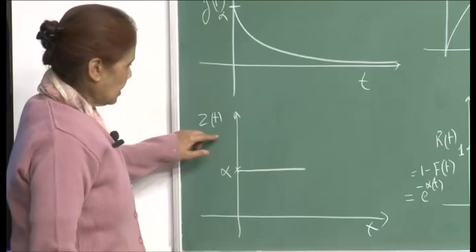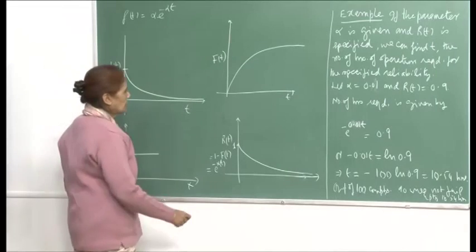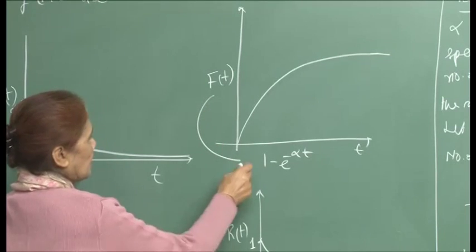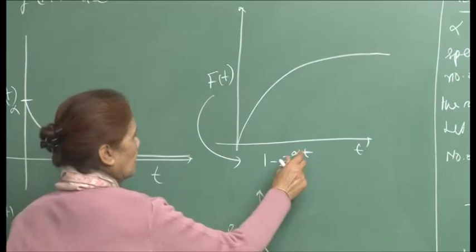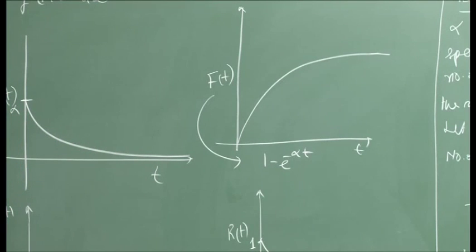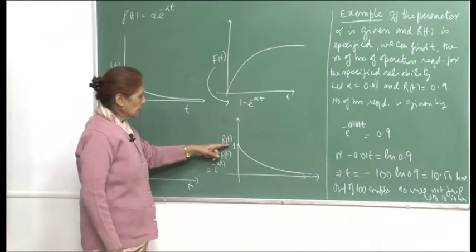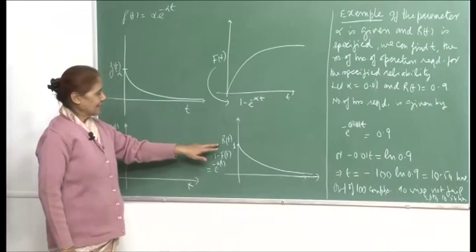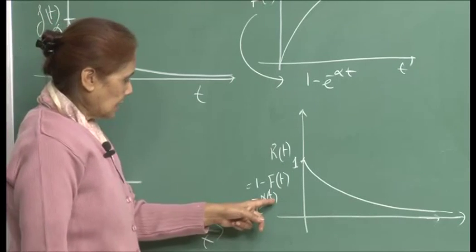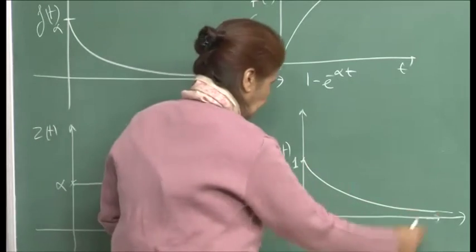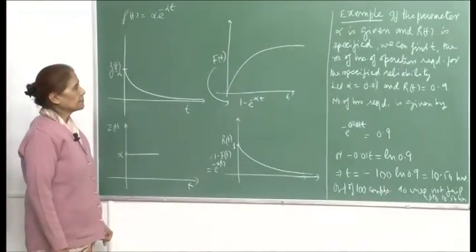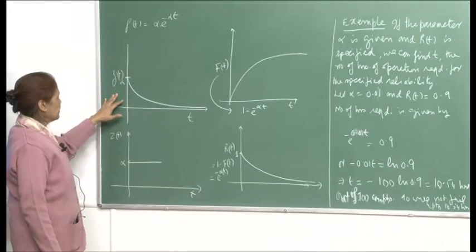The CDF f(t) is 1 minus e^(−αt): at t equal to 0, this is 0, and as t goes to infinity, it goes up to 1. Then the reliability function R(t), which is 1 minus f(t), equals e^(−αt): at t equal to 0 it is 1, and then it decreases as t goes to infinity. So the reliability decreases as t goes to infinity.